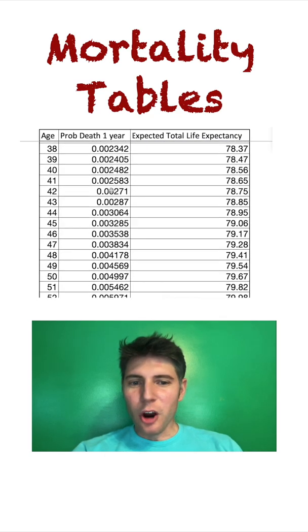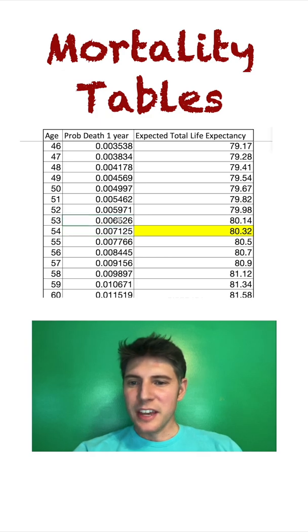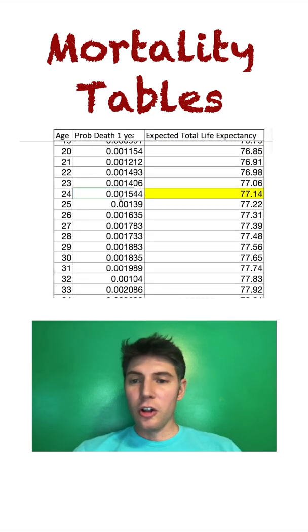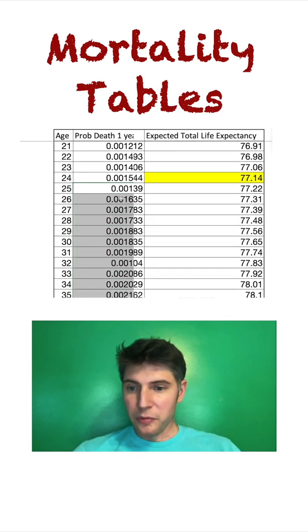The way to think of this is your parents have already made it to 54 - they've survived all of these kill-offs every year. But for you as a 24 year old, you've got to survive all of this stuff first before you even make it to the age they are.